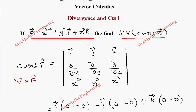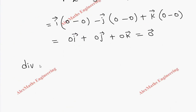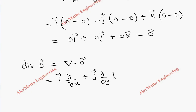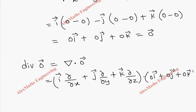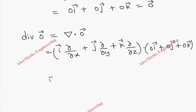Now we want divergence of curl F vector. We got curl F vector equals 0 vector. Now we need divergence of this 0 vector, and this is nothing but the dot product of del and 0 vector. Del is i ∂/∂x plus j vector into ∂/∂y plus k vector into ∂/∂z. So here we have to do dot product with 0 vector, which is 0i plus 0j plus 0k. Multiplying corresponding coefficients, we get ∂/∂x of 0 is 0, ∂/∂y of 0 is also 0, and ∂/∂z of 0 is also 0.